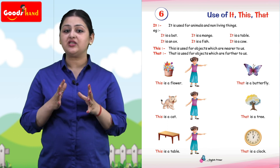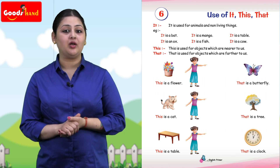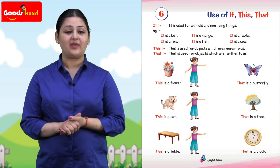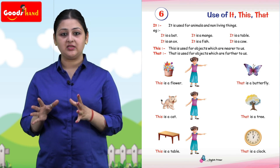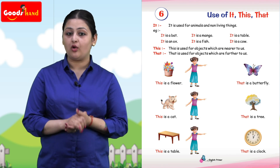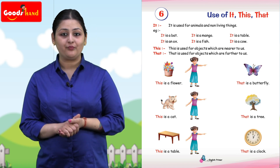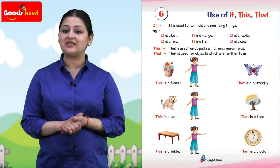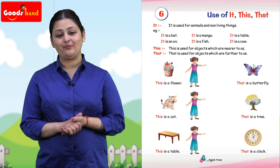It is used for animals and non-living things. Example: it is a bat, it is an ox, it is a mango, it is a fish, it is a table, it is a cow.